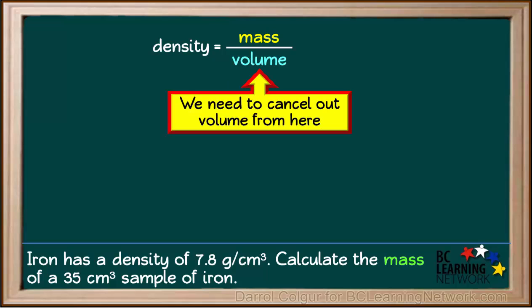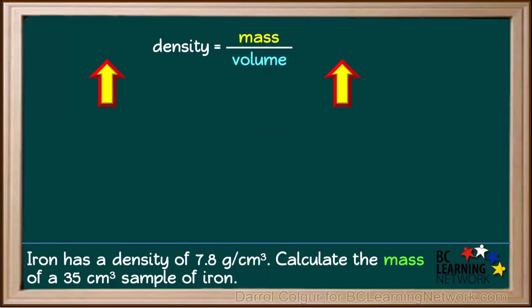To get mass by itself on the right side of the equation, we need to cancel out volume from the denominator. We can do something to an equation as long as we do the same thing to both sides. So we will multiply both sides of this equation by volume, like this.